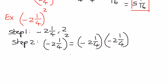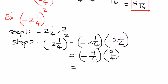Now we can simplify the mixed fraction. We note that negative times negative is a positive. 4 times 2 is 8, and 8 plus 1 is 9, over 4. So we are going to multiply the numerator parts and multiply the denominator parts, and this value is going to be equal to 81 over 16. 9 times 9 is 81, and 4 times 4 is 16.